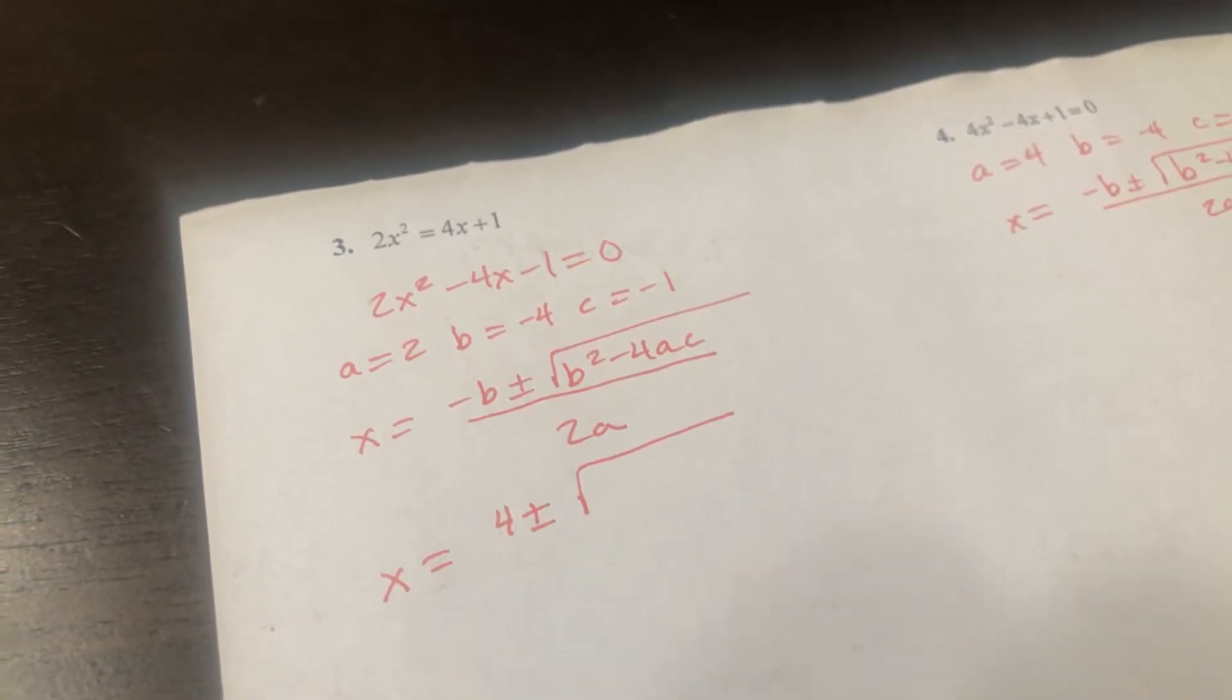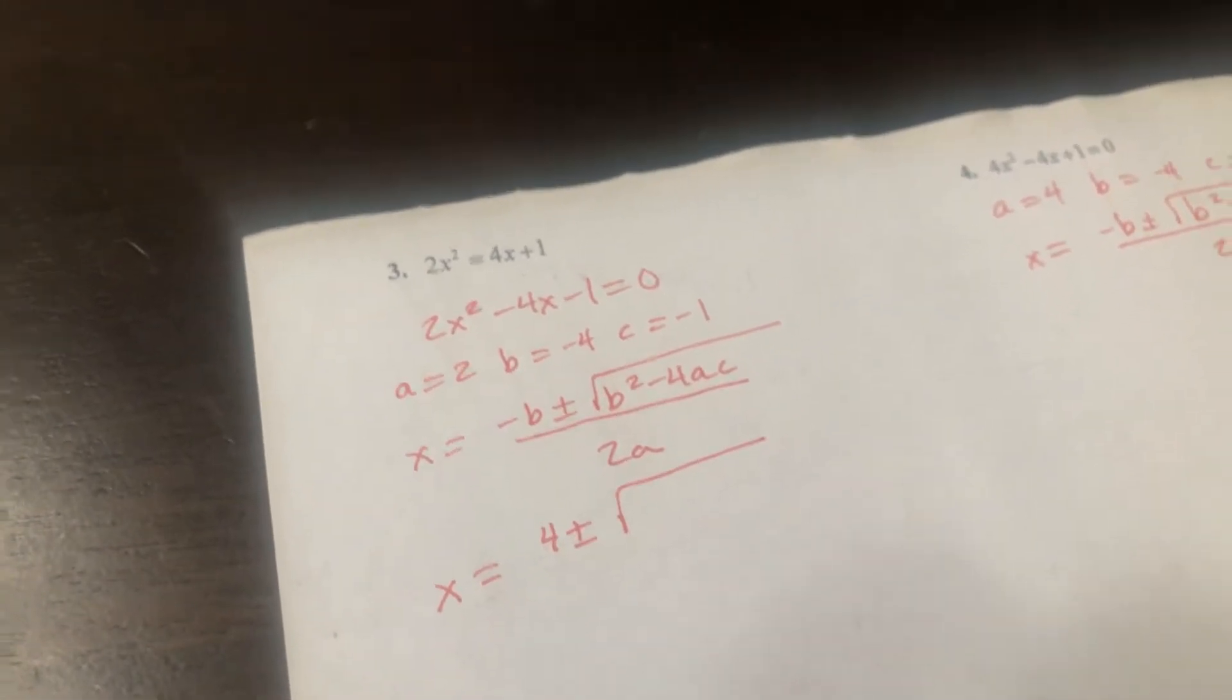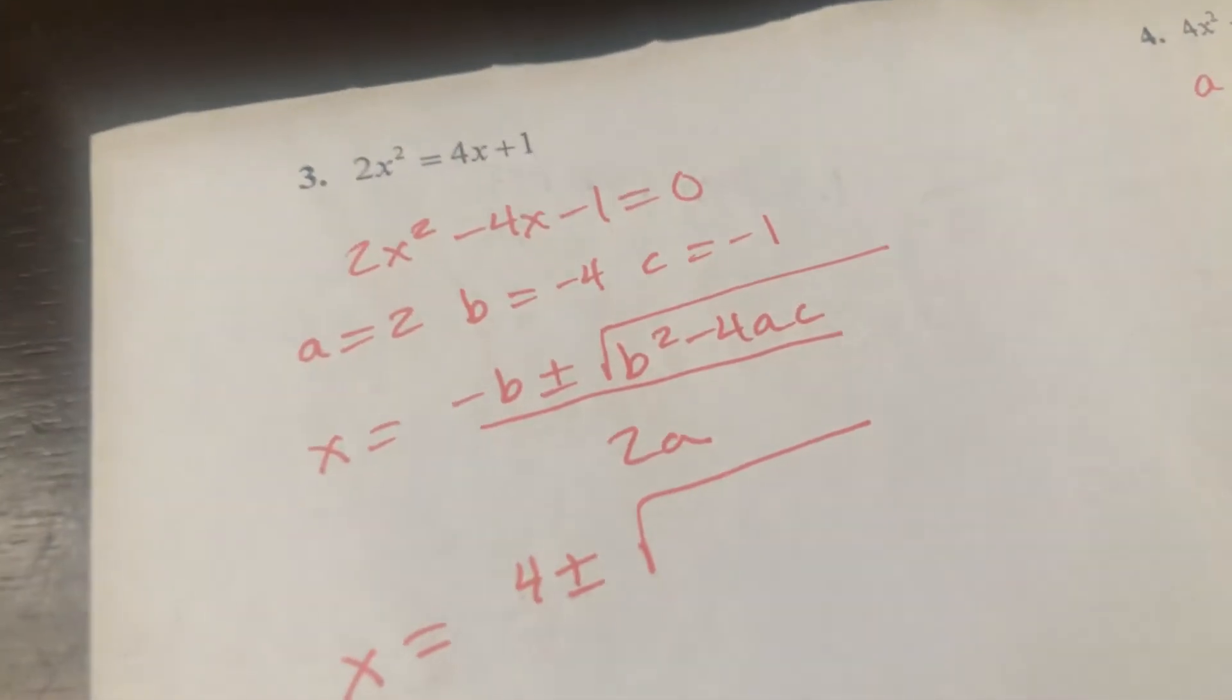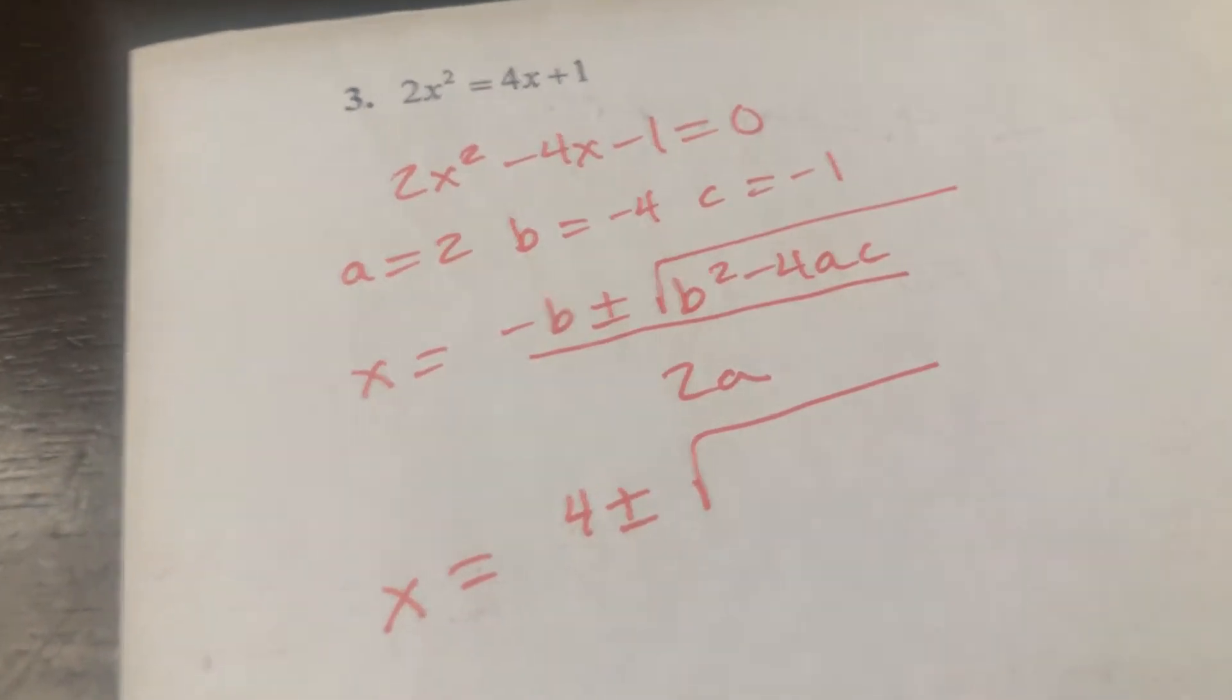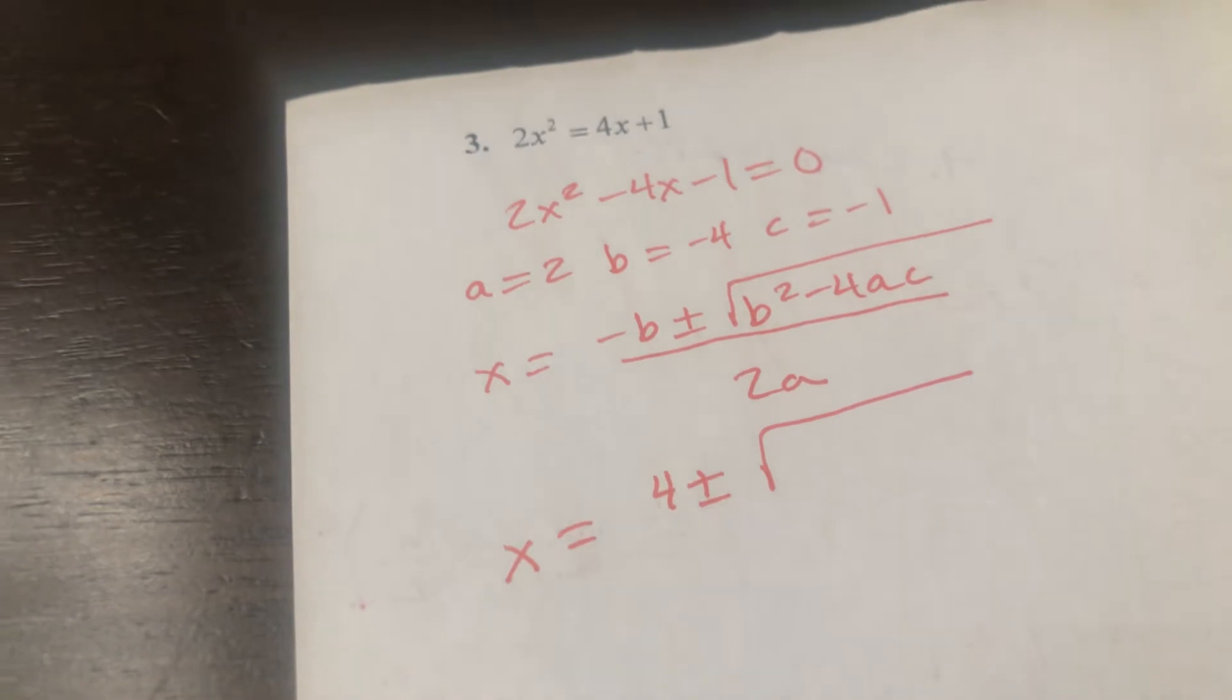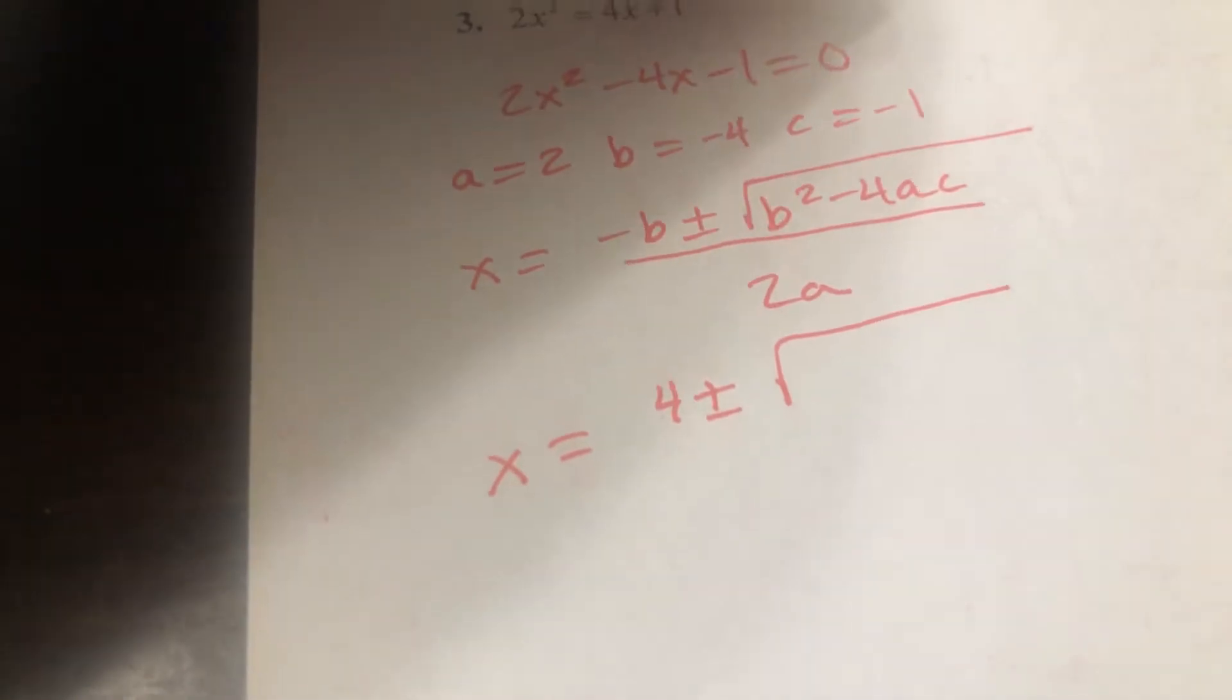All right, so now let's get these other two problems worked. So again, I need to set it equal to zero. And if y'all remember from last quarter, I always like to leave my leading coefficient positive. So instead of bringing the 2x squared over, I'm going to choose to bring the 4x and the 1 over.